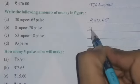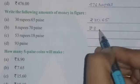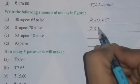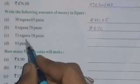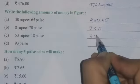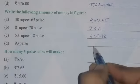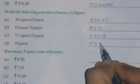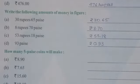Similarly, 8 rupees 70 paise — write the rupees symbol, 8 rupees, then put a decimal point and write 70. Next, 53 rupees 18 paise — so 53 and then 18. And 93 paise only — so rupees 0 and 93, giving 0.93.